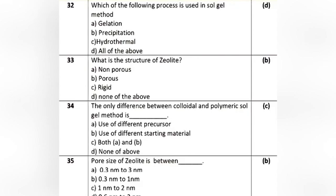Question 11: Core size of zeolite is between — Option A: 0.3 nanometer to 3 nanometer. Option B: 0.3 nanometer to 1 nanometer. Option C: 1 nanometer to 2 nanometer. Option D: 0.6 nanometer to 2 nanometer. The correct answer is Option B: 0.3 nanometer to 1 nanometer.